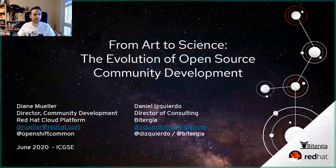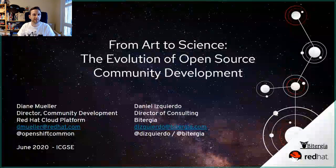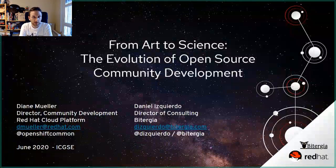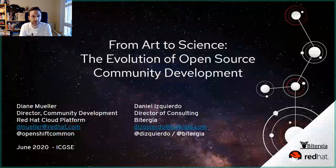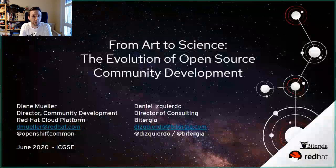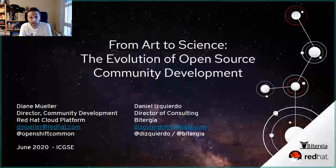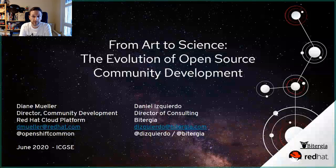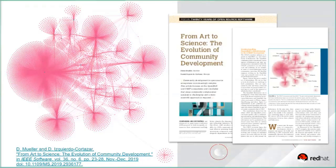Welcome everyone to this new presentation. The title for today is From Art to Science: The Evolution of Open Source Community Development. I have the pleasure to have done this research with Diane Muller, Director of Community Development at Red Hat Cloud Platform, and myself, Daniel Izquierdo, Director of Consulting at Vitergia. You all should have access to the paper, which is five pages published at IEEE Software.